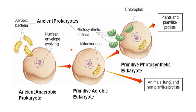It is believed that larger prokaryotic cells engulfed or consumed these smaller prokaryotes. The larger cells engulfed those smaller bacteria, but instead of the smaller bacteria getting digested, some of them remained intact inside the larger prokaryotes and thus began to live inside the cells as symbionts — meaning they could live together with mutual benefit.